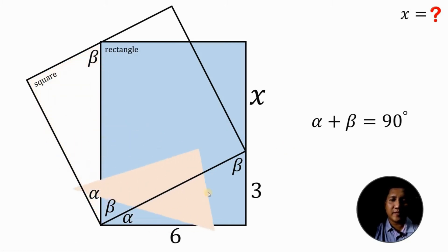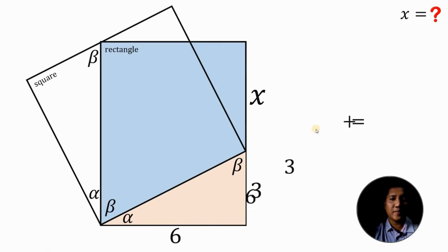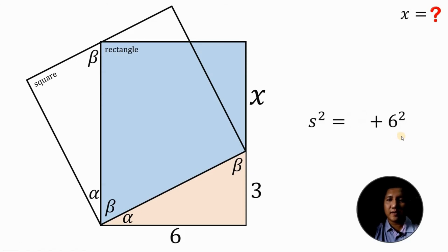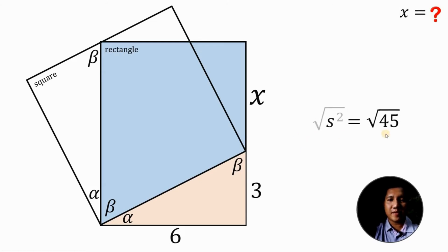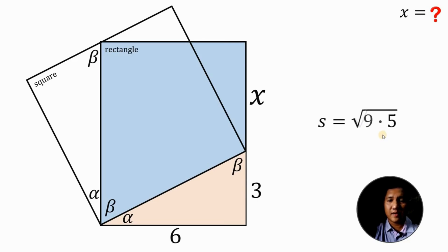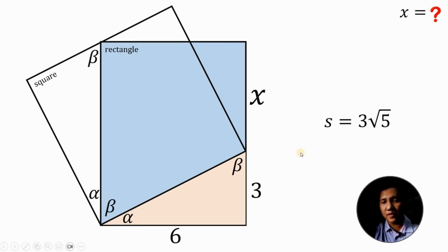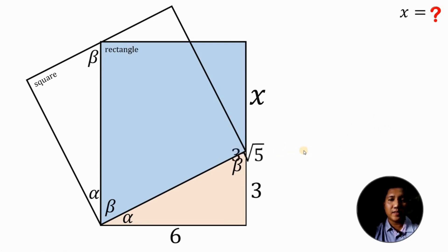First, let's focus on this right triangle and solve the hypotenuse or the side length of this square. To do that, we will use the Pythagorean theorem. So we have s squared equals 3 squared plus 6 squared. Now 3 squared is 9 and 6 squared is 36. Now 9 plus 36 will give us 45. To solve for the value of s, let's take the square root on both sides. We have s equals square root of 45, which is square root of 9 times 5, and square root of 9 is 3. So this simplifies to s equals 3 times square root of 5.